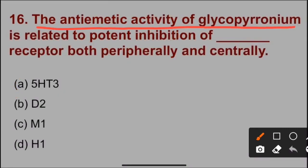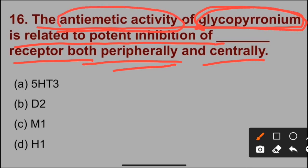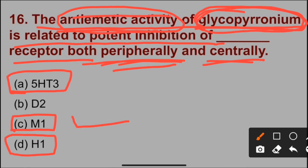Next question: The antiemetic activity of glycopyrronium is related to potent inhibition of the M1 receptor both peripherally and centrally. Glycopyrronium is an anticholinergic drug that shows antiemetic activity by inhibiting the M1 receptor. Drugs like ondansetron and granisetron inhibit the 5-HT3 receptor to show antiemetic activity, while promethazine inhibits the H1 receptor. So option C is correct for question number 16.